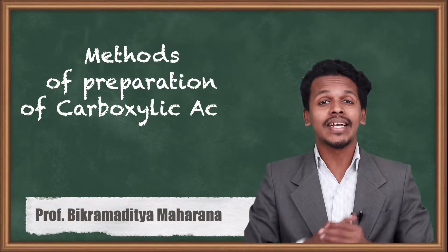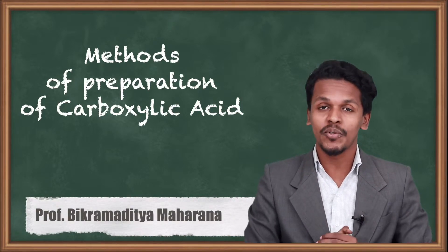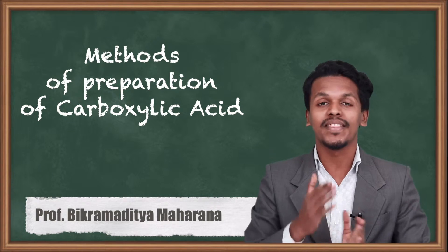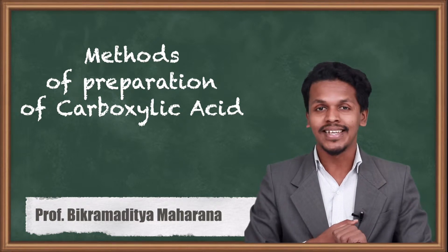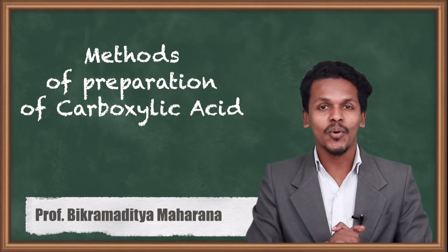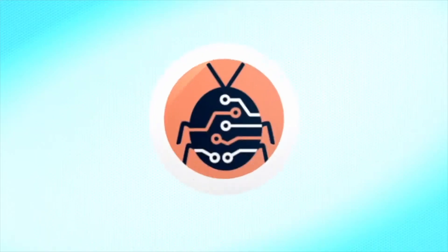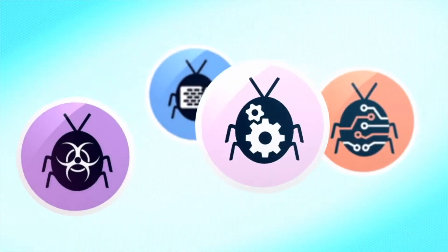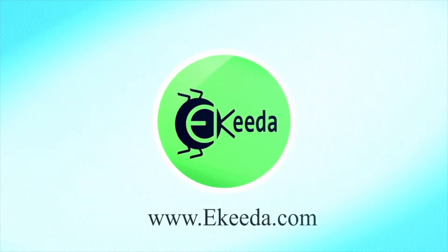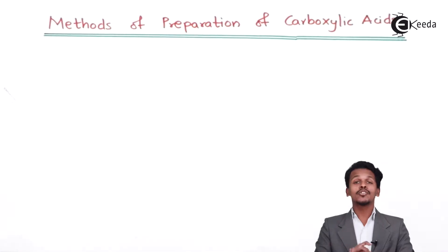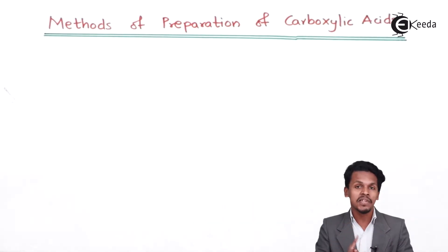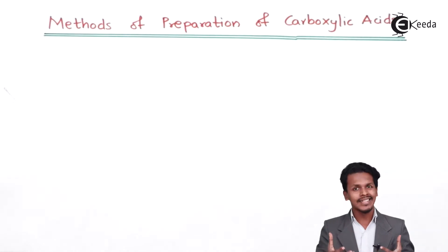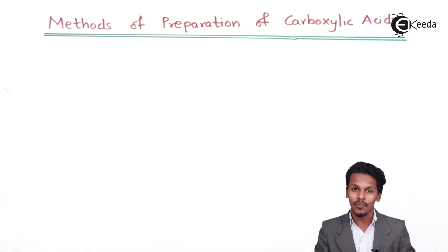In the previous lecture we understood the structure of the carboxylic group, and now we are going to talk about the methods of preparation of carboxylic acid. In this topic we are going to learn a synopsis of how we can prepare carboxylic acid using different chemicals. Let us understand the different methods to prepare carboxylic acid.